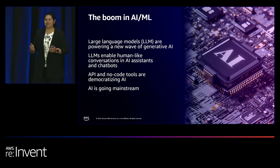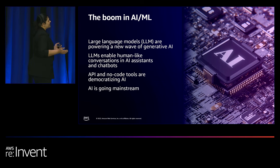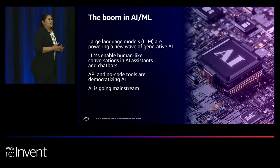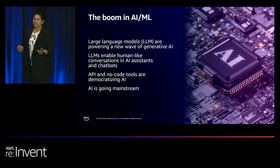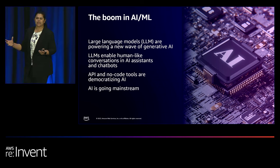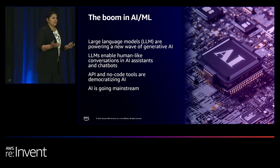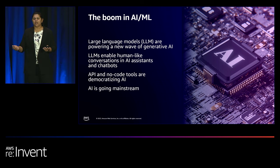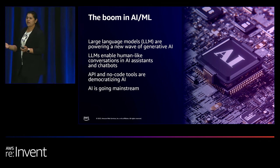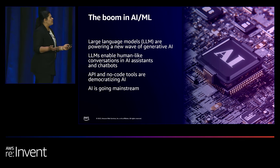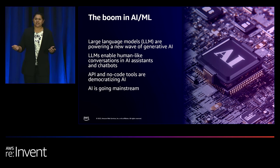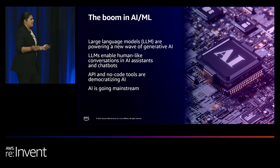This year has been incredible when talking about AI capabilities, and there's a lot of excitement around generative AI. Large language models have really enabled a new wave of generative AI applications. LLMs have been trained on massive data, enabling human-like conversations. The other trend is lowering the barrier to building AI-based applications — APIs and no-code tools are democratizing AI. What would have taken months to build you can now build within hours, namely chatbots and AI-based assistants.